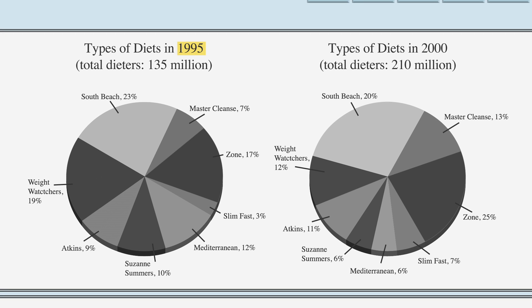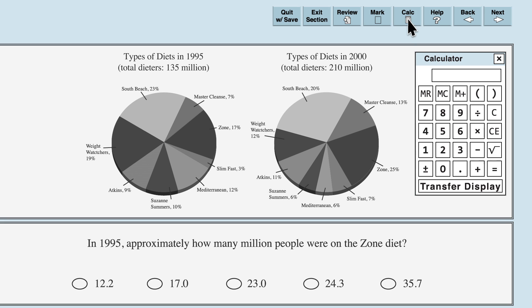We're only asked about 1995, which is all in the chart on the left. Focusing on the chart on the left, we can see that 17% of 135 million dieters in 1995 were on the zone diet. Using the on-screen calculator you'll have during the test, multiply .17 by 135, and you get the answer of approximately 23 million people, or the third answer choice.